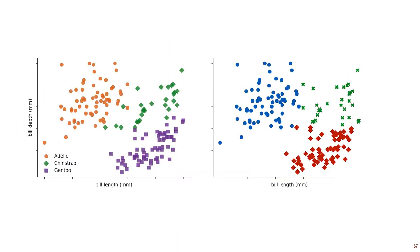Here's the clustering we end up with after a couple of these iterations. We don't know what these clusters mean without investigating further, but in this case they correspond pretty closely to the species of the penguin. It may seem a little magical that this algorithm works at all. We won't try to give intuition here — just take this as an example of how clustering might work in practice. In a later lecture, we will see another algorithm called expectation maximization, which is very similar to k-means, and there we will try to provide some intuition for why this sort of approach works.